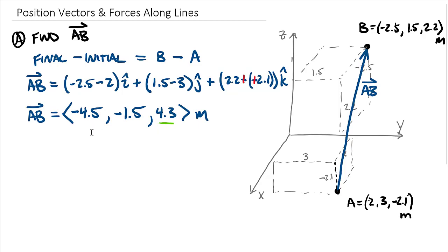Cross-checking: in x we started at +2 and ended at −2.5, going back 4.5 meters, hence −4.5. In y we went from 3 to 1.5, a change of −1.5. Either way — final minus initial or observing the changes — both approaches are outlined in the textbook. Next we add the unit vector: Part B is to find the unit vector along AB.